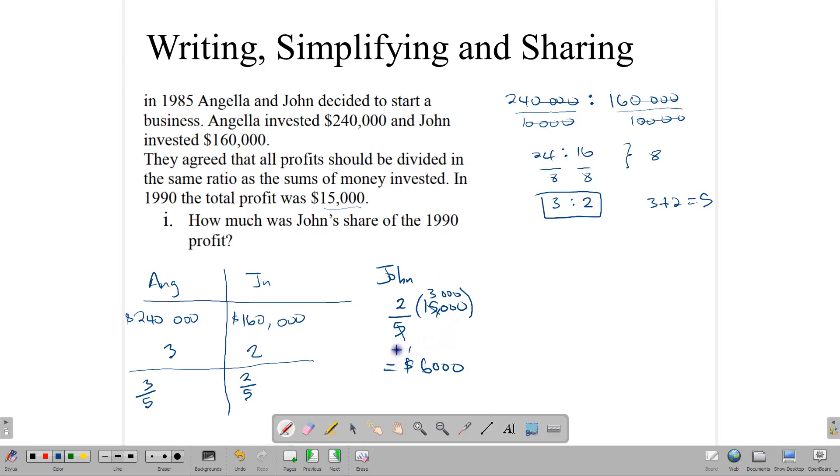John would get $6,000 and Angela would get the remaining $9,000 to make up the $15,000. If you don't want to do it this way, then you can take the $15,000, and since we know it's divided into 5 parts, divide that by 5. $15,000 divided by 5 gives us $3,000. John is going to get 2 parts, so 2 times $3,000, which again comes back to $6,000. You can use whichever method you prefer.